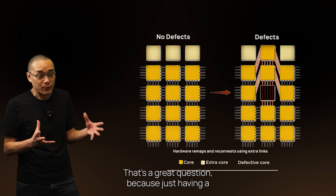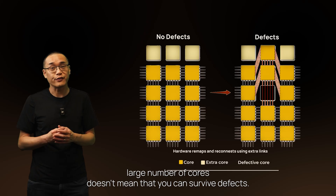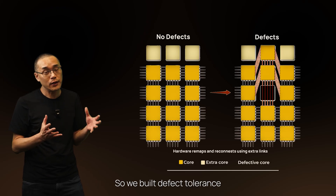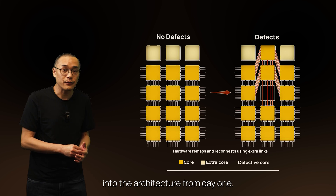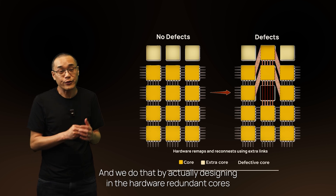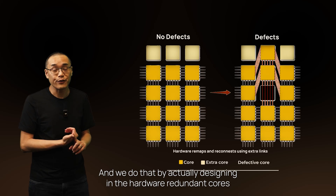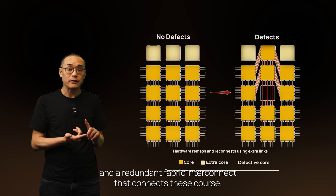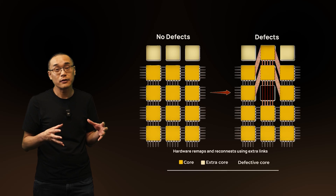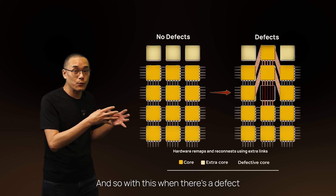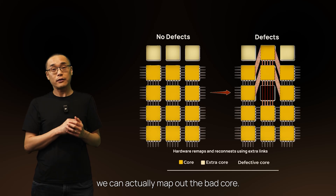Just having a large number of cores doesn't mean that you can survive defects. So we built defect tolerance into the architecture from day one. We do that by actually designing in hardware redundant cores and a redundant fabric interconnect that connects these cores. When there's a defect, we can actually map out the bad core.